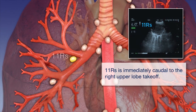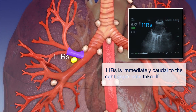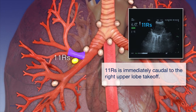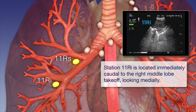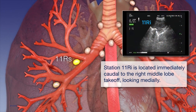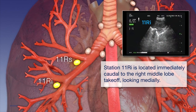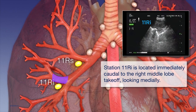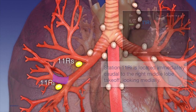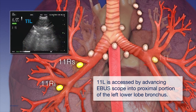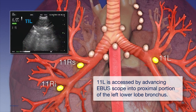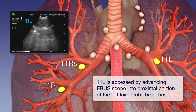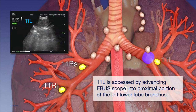Station 11RS is immediately caudal to the right upper lobe takeoff. Station 11RI is located immediately caudal to the right middle lobe takeoff, looking medially. Station 11L is accessed by advancing the EBUS scope into the proximal portion of the left lower lobe bronchus.